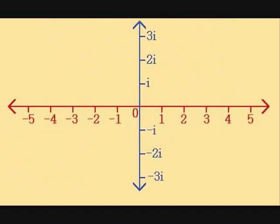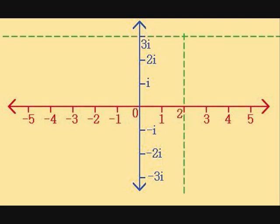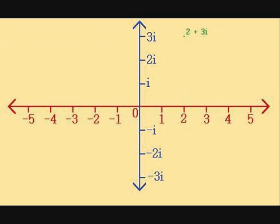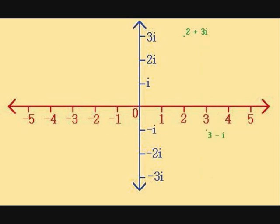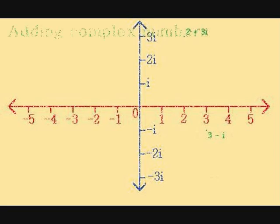So, going back to our diagram, where would 2 plus 3i fit? Well, if you work across to 2, and then up to 3i, it fits up here. For 3 minus i, again, we work across to 3, and down to minus i. Basically, the complex numbers occupy this whole region above, below, and including the real number line that we're used to, and so instead of a line, the complex numbers occupy a plane.